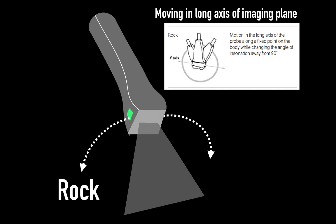This illustration helps demonstrate with respect to the plane of the probe marker. I often describe probe movements with respect to hand movements. If your thumb is the probe marker, then you can think of rocking as the handshake of probe movements.